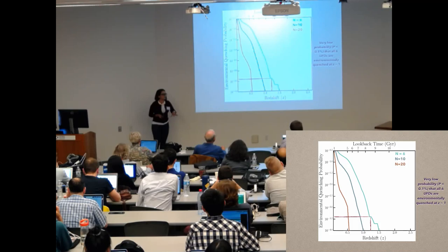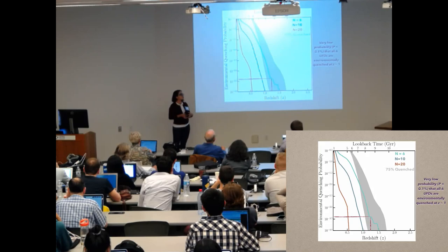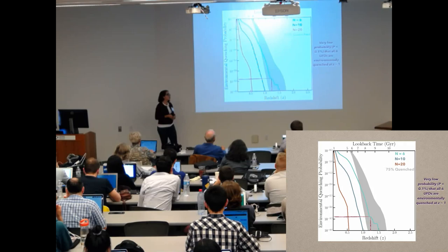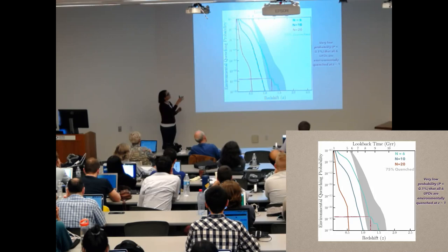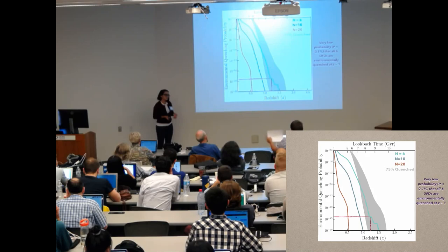So just to push this a little bit, I wanted to look at being a little more conservative and say instead of requiring the entire sample of ultrafaint dwarf galaxies to be quenched, I'm just going to require that 75% have fallen in by that given redshift. And as you can see in the gray band, I have the spread from an n equals 6 group all the way to an n equals 20 group. This increases the probability a little bit, but not by much.